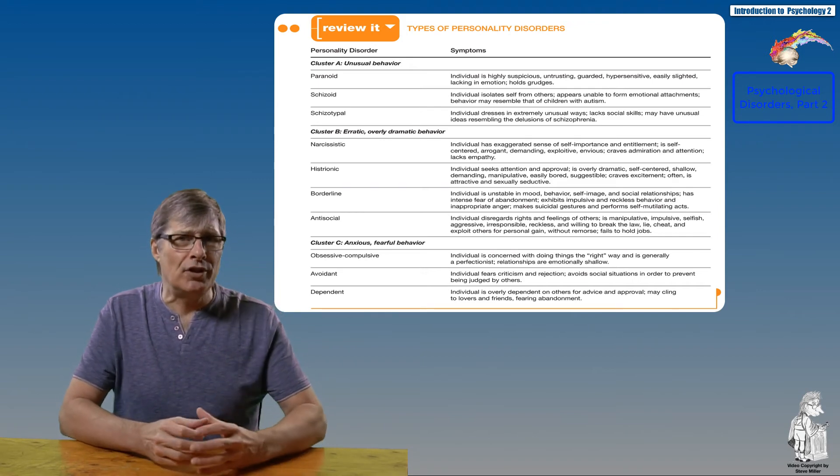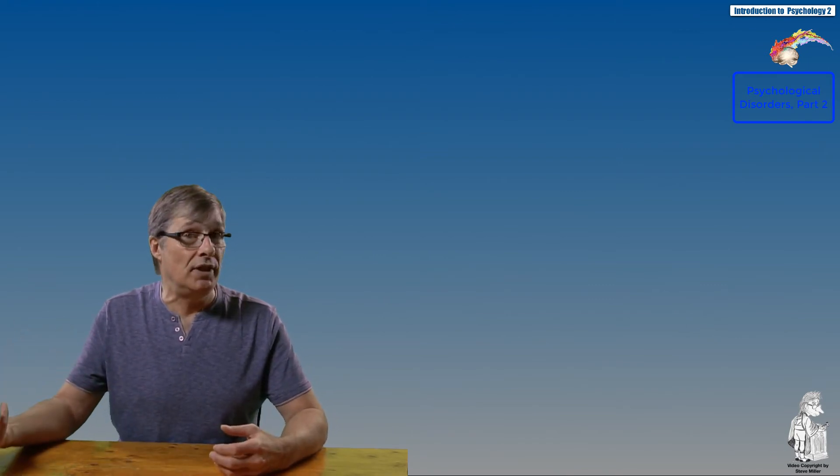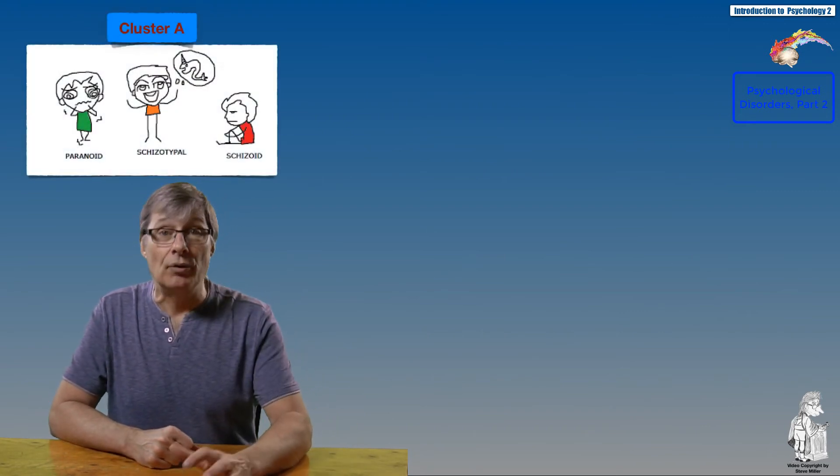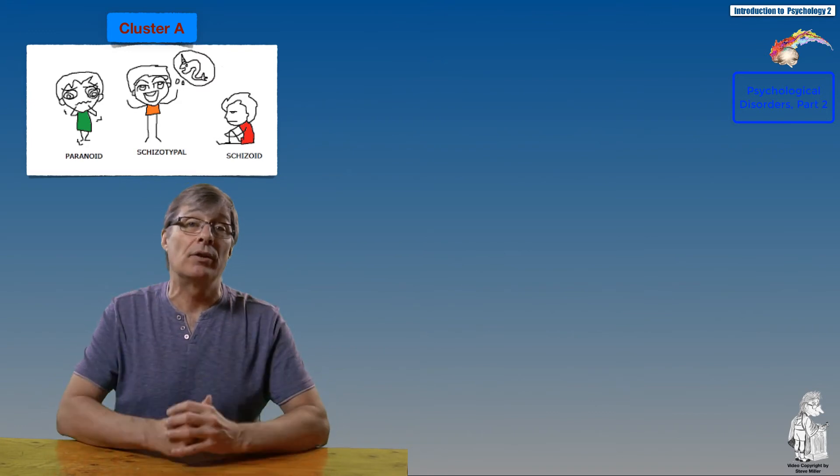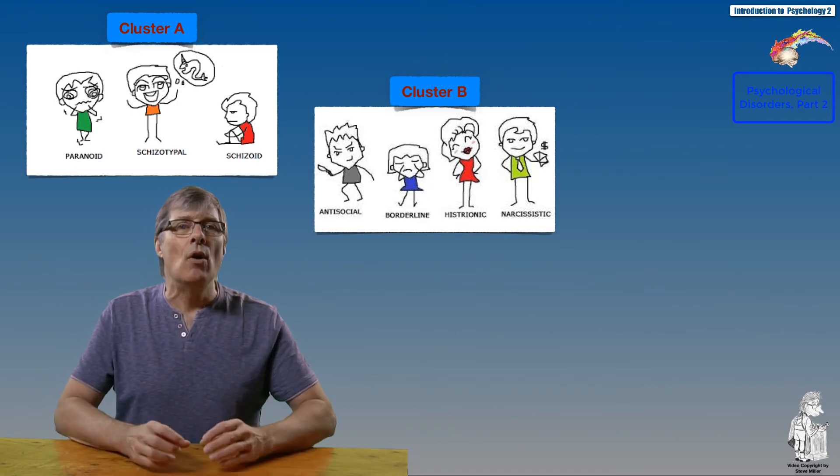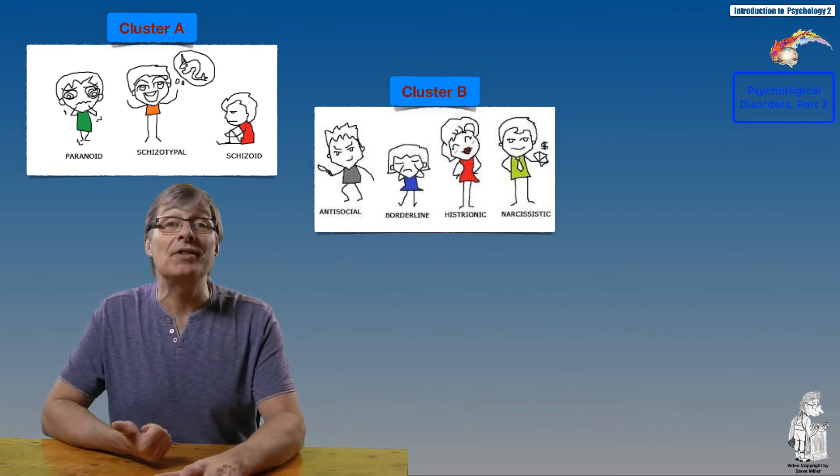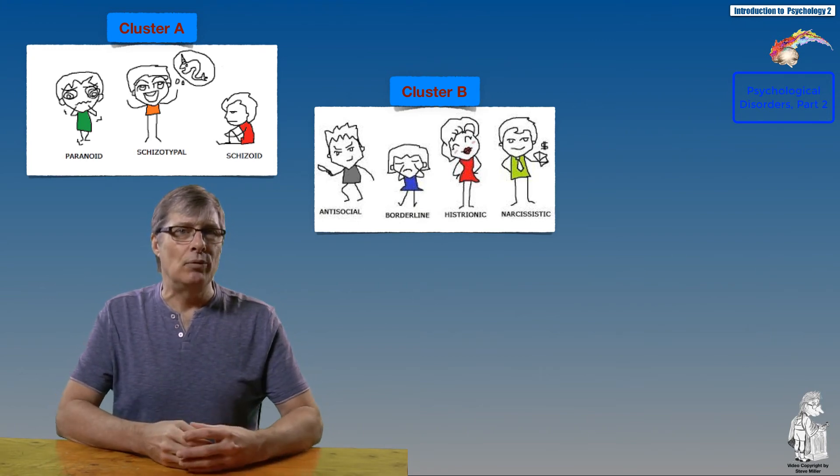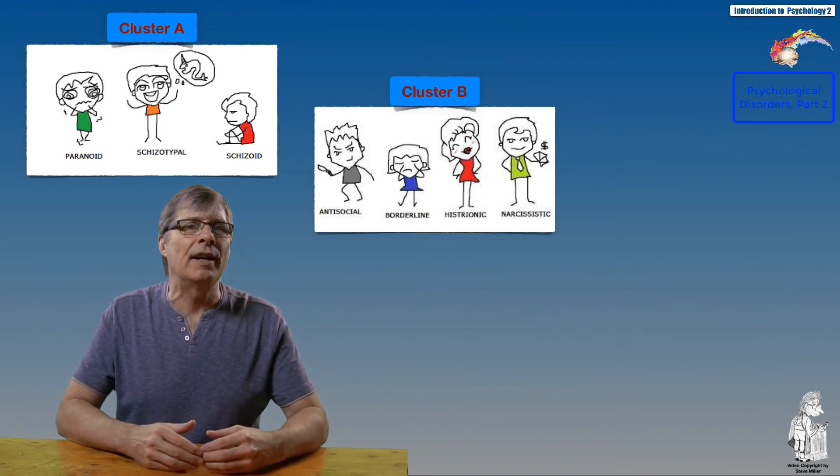Cluster A personality disorders are characterized by odd behavior—here we would find paranoid, schizoid, and schizotypical disorders. Cluster B personality disorders are characterized by erratic and overly dramatic behaviors. This would include narcissistic personality disorder and histrionic personality disorder. They're associated with an increased risk of suicide, and examples are borderline personality disorder and antisocial personality disorder.